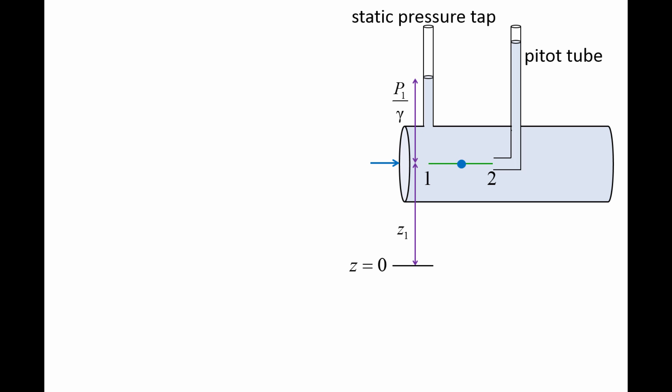As the liquid particle travels from point 1 to point 2, it will decelerate until its velocity becomes zero at point 2. The particle comes to rest at point 2 because the fluid inside the pitot tube is static. If the distance between points 1 and 2 is not very large, we can assume that viscous effects are negligible and apply the Bernoulli equation. The elevation at points 1 and 2 is the same, so the gamma z terms cancel out on both sides, and the speed at point 2 is zero, so the rho v2 squared over 2 term is zero.